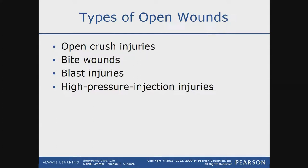As discussed in the closed wounds section, crush injuries can open up the skin. Bite wounds are obviously also open wounds. Blast injuries can cause open wounds from the physical impact of the body slamming into the ground or wall, or from shrapnel expelled by the blast itself. High-pressure injection injuries would be from pressurized machinery. Go ahead and write these down — these are all the different types of open wounds you'll come into contact with.